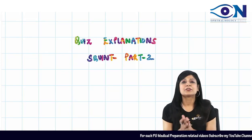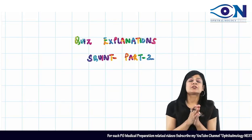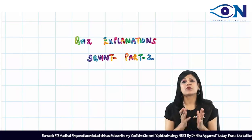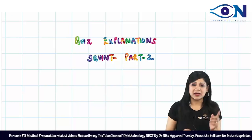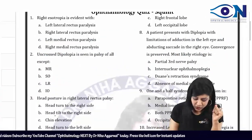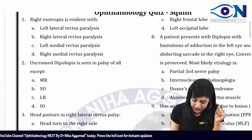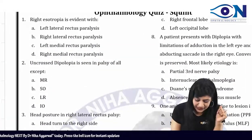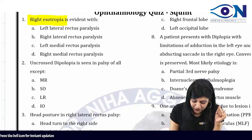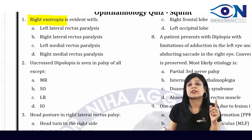Alright guys, so here we will be doing the video explanation of your quest, Quint part 2. So if you look at the questions, number 1 is: the right esotropia is evident with.